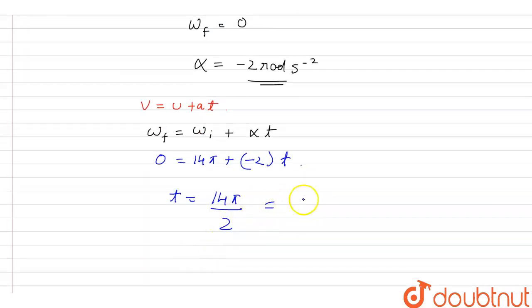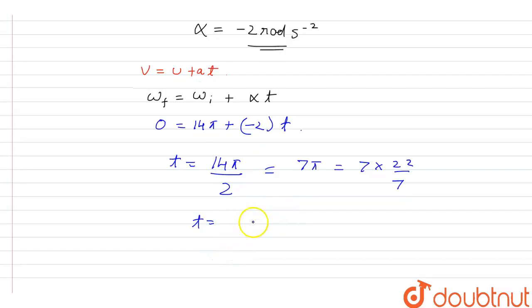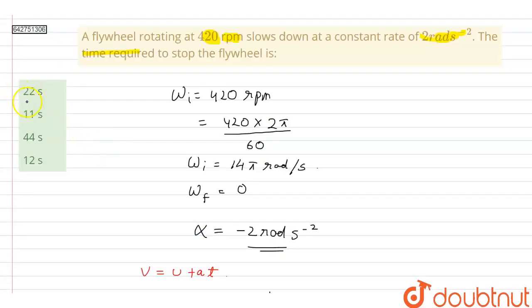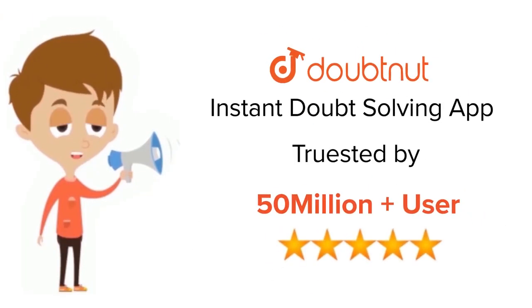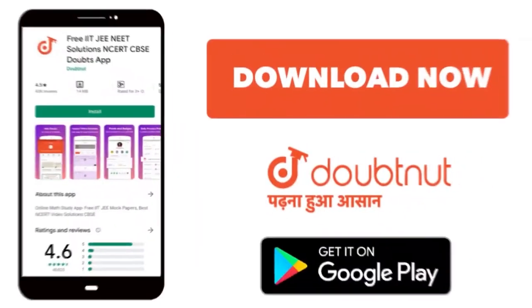From here I can write time t will be equal to 14π divided by 2, so this means it will be equal to 7π, and this will be 7 times 22 by 7, so time will be equal to 22 seconds. Therefore, time required to stop the flywheel is 22 seconds, option A. For class 6 to 12, IIT-JEE and NEET level, trusted by more than 5 crore students, download Doubtnut app today.